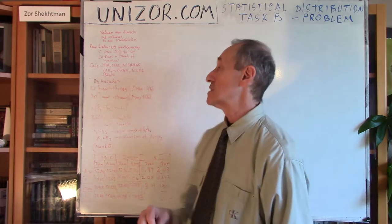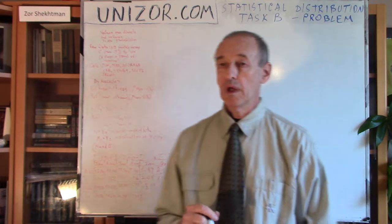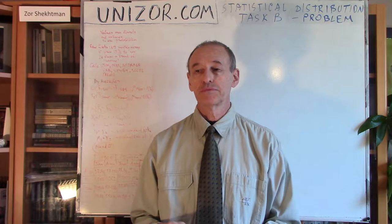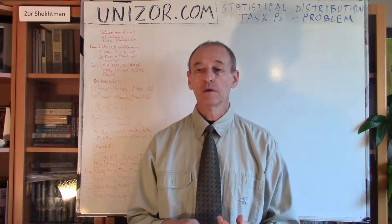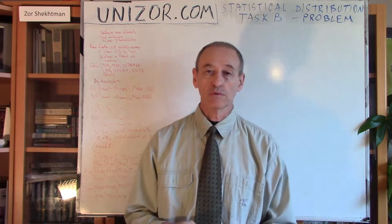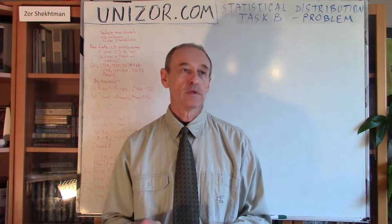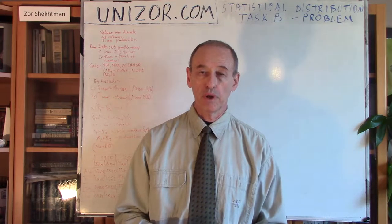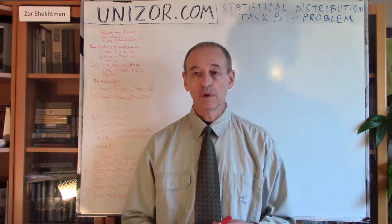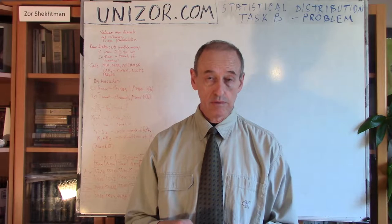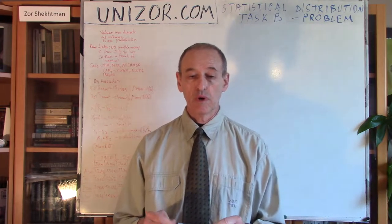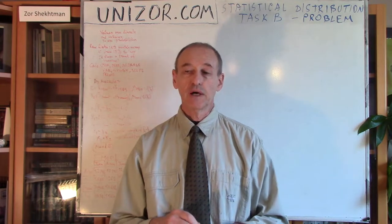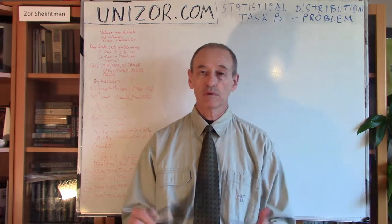Today's lecture is about statistical distribution. The particular task we will be dealing with is when you would like to evaluate something about a random variable if you don't know which values it's supposed to take. There are no predetermined, predefined values, and obviously you don't know the probabilities. We consider discrete values and use a certain number of statistical observations to analyze and make judgments about the statistical distribution of this random variable.